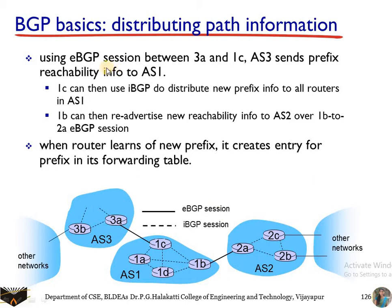Using the eBGP session between 3A and 1C, AS3 sends prefix reachability information to AS1. Router 1C can then use iBGP to distribute the same information among routers within AS1. Router 1B, which has connectivity with AS2, re-advertises the reachability information to AS2 — broadcasting AS3 plus AS1 information from 1B to 2A using external BGP sessions.